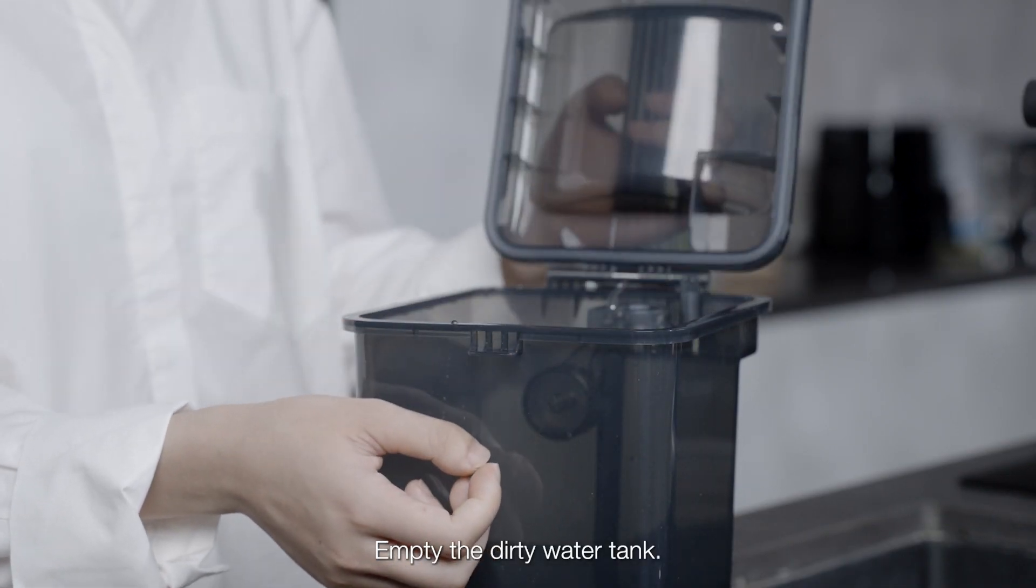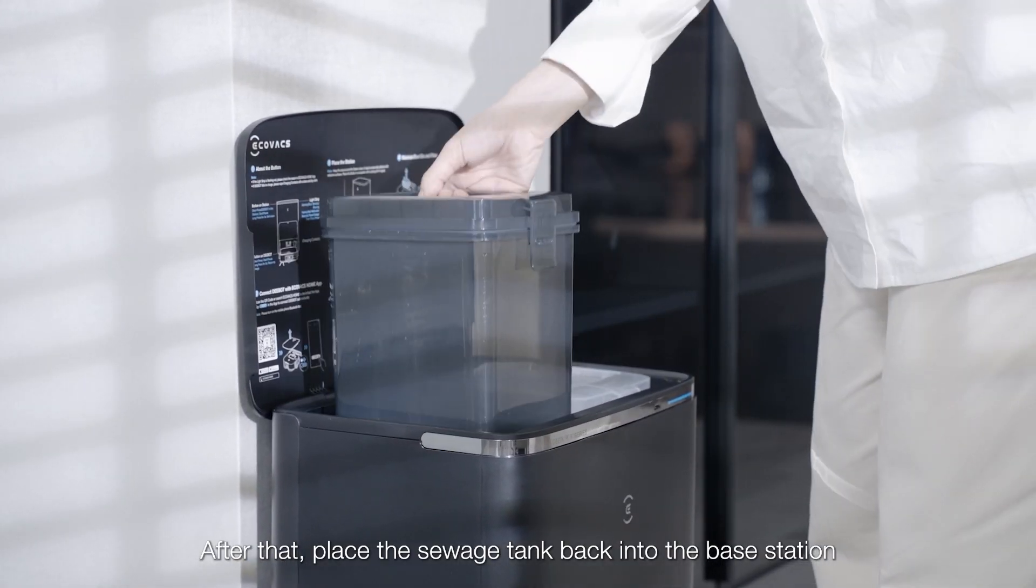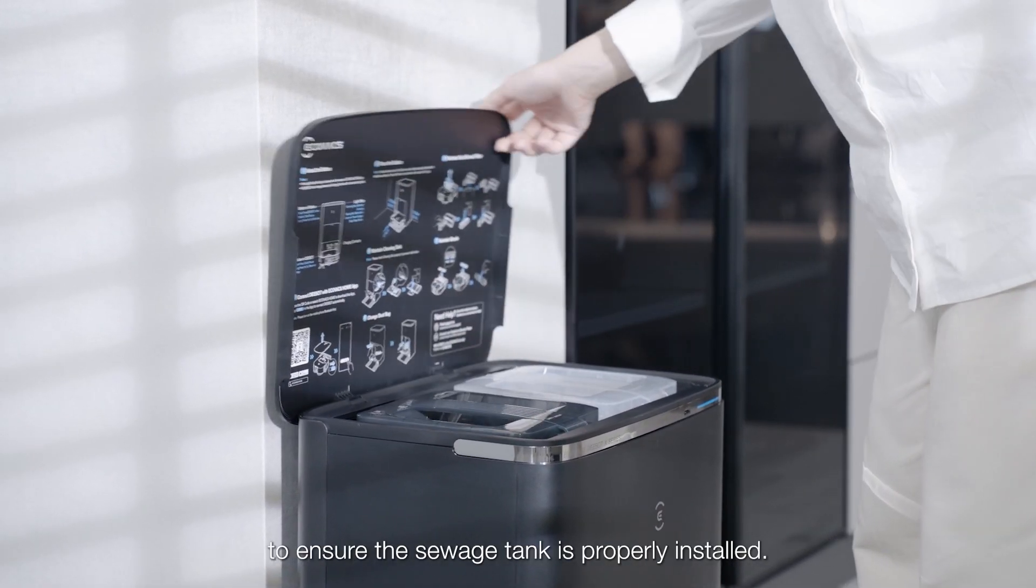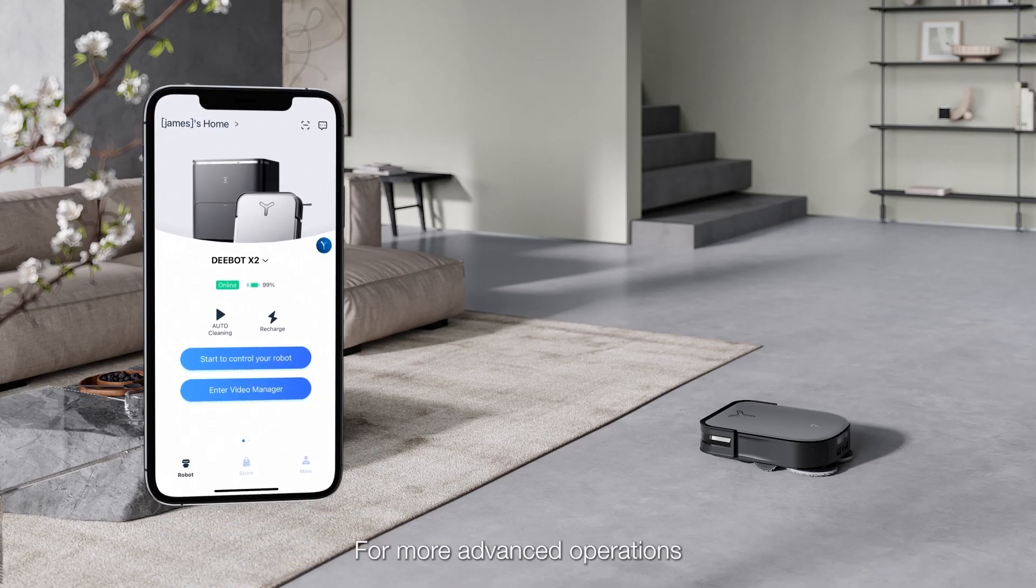Empty the dirty water tank. After that, place the sewage tank back into the base station and press it downward gently to ensure the sewage tank is properly installed. For more advanced operations,